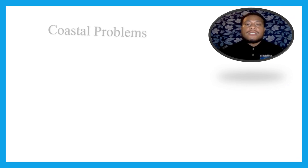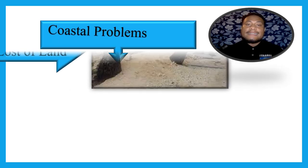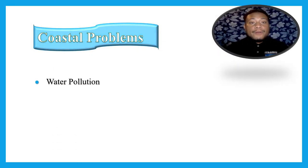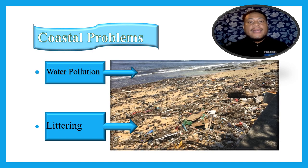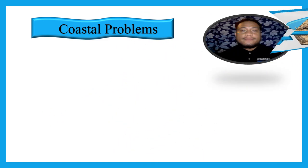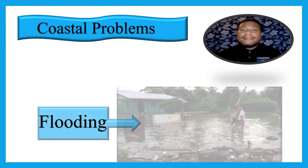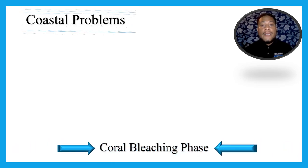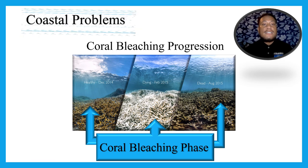Here are some of the coastal problems due to lack of coastal management, such as loss of land. Water pollution and human waste, which affect the purity of our coast and living organisms. Water pollution and flooding, which affects our environment. Water pollution and coral degradation near the coast, which destroys the ecosystem of coastal habitats.